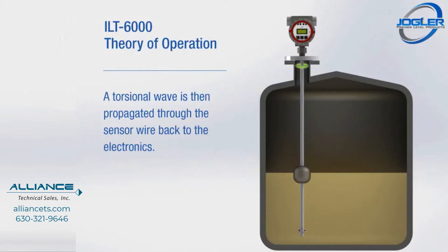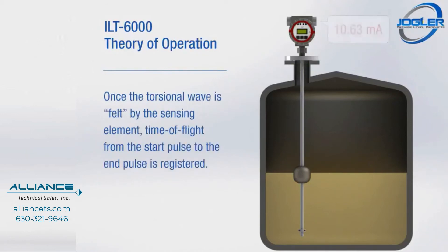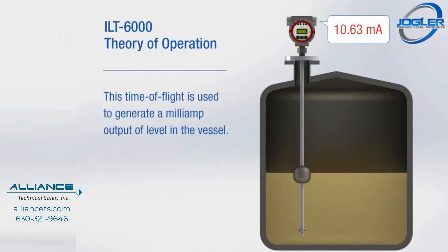Once the torsional wave is felt by the sensing element, time of flight from the start pulse to the end pulse is registered. This time of flight is used to generate a milliamp output of level in the vessel.